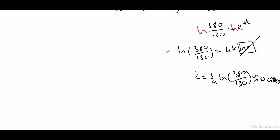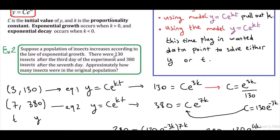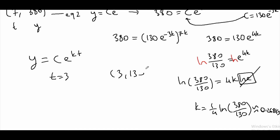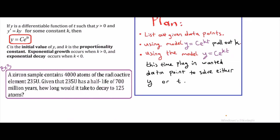Now we know k. Using the growth model y equals c times e to the kt, we solve for the initial value c using the data point t equals 3, where y equals 130. So 130 equals c times e to the 0.268159 times 3. Solving for c: c equals 130 divided by e to that value. Plugging everything into the calculator gives approximately 58 insects as the original population.